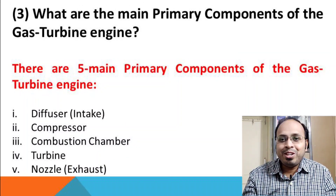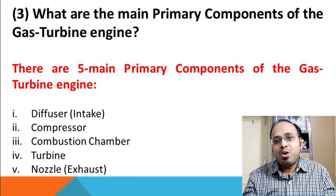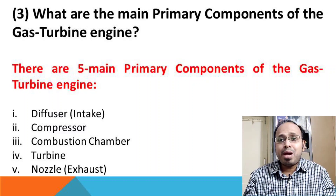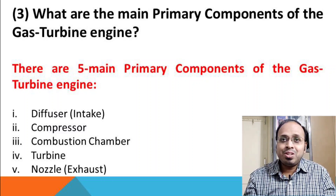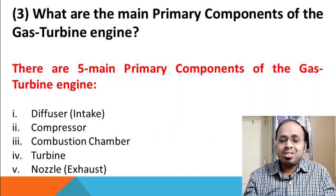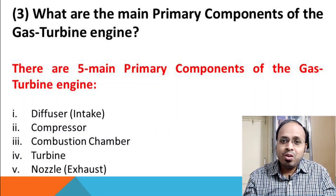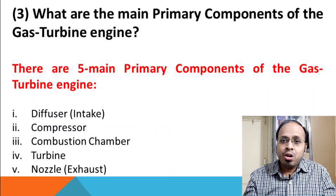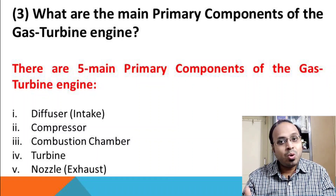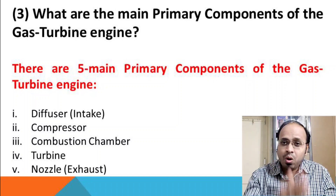The third question is: what are the primary components of the gas turbine engine? There are five main primary components. The first is the diffuser, second is the compressor, third is the combustion chamber, fourth is the turbine, and fifth is the nozzle, which is also called the exhaust.